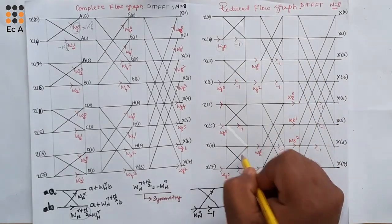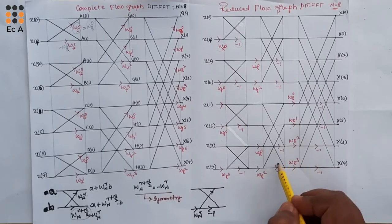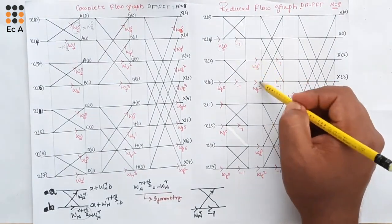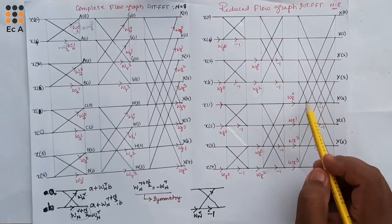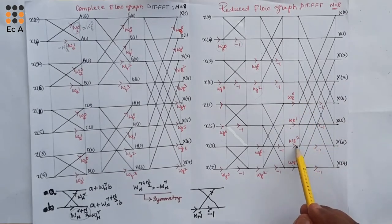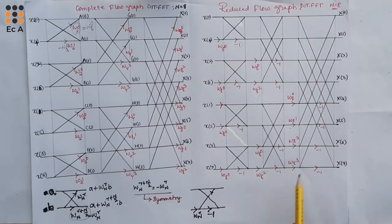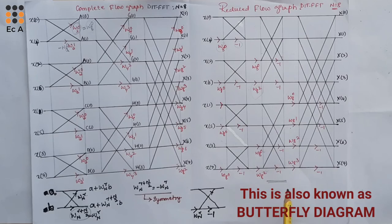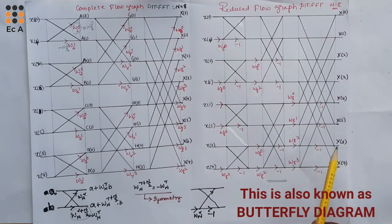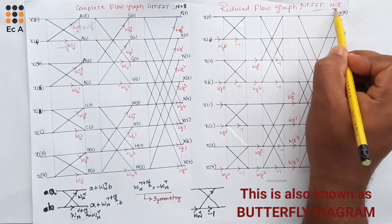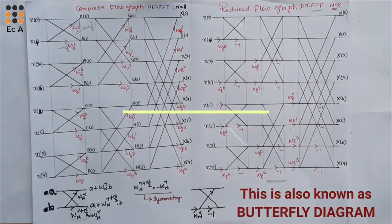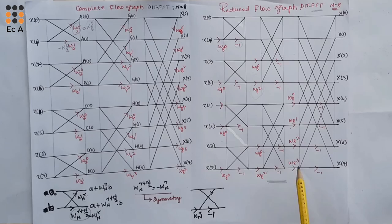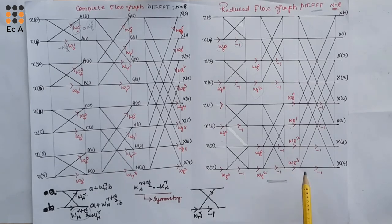Similarly, we have written for other values. In the second stage, we simplified the values as W_8^0 and W_8^2, and those two values are taken in the graph. In the first stage, the values are written as W_8^0, W_8^1, W_8^2, and W_8^3. This is the reduced flow graph for the DIT FFT of 8-point DFT. Once asked to perform fast Fourier transform for an 8-point DFT, use this reduced signal flow graph to solve the problem. This is the radix-2 DIT FFT algorithm for N equal to 8.